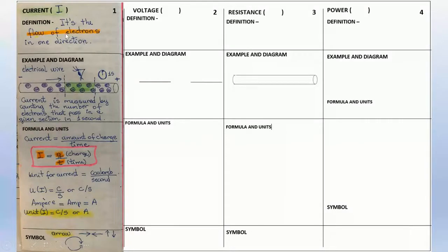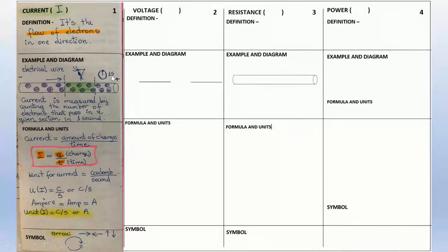Let me start with current. The abbreviation for current is uppercase I, and the definition is the flow of electrons in one direction. In this diagram, we have an example of electrons that can move freely through a wire. Here we have an observer counting how many electrons pass in one section in one second. So current is measured by counting the number of electrons or charges that pass in a given section in one second. The formula for current is the amount of electrons per amount of time — in this case, one second.